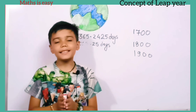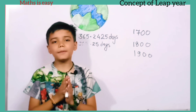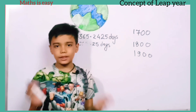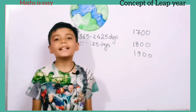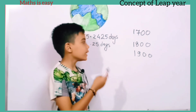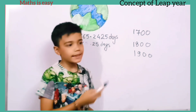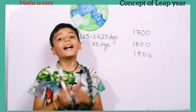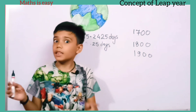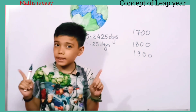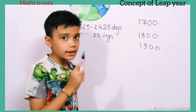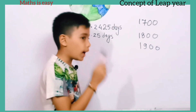If a year is evenly divisible by four and the remainder comes to zero, then the year is a leap year. However, years 1700, 1800, and 1900 are divisible by four but they are not leap years. Let's understand why.